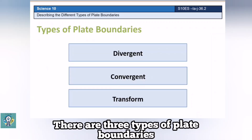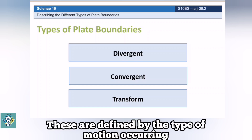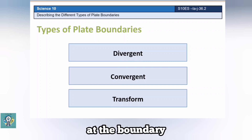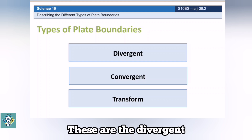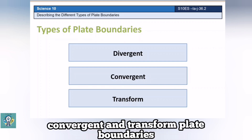There are three types of plate boundaries. These are defined by the type of motion occurring at the boundary. These are the divergent, convergent, and transform plate boundaries.